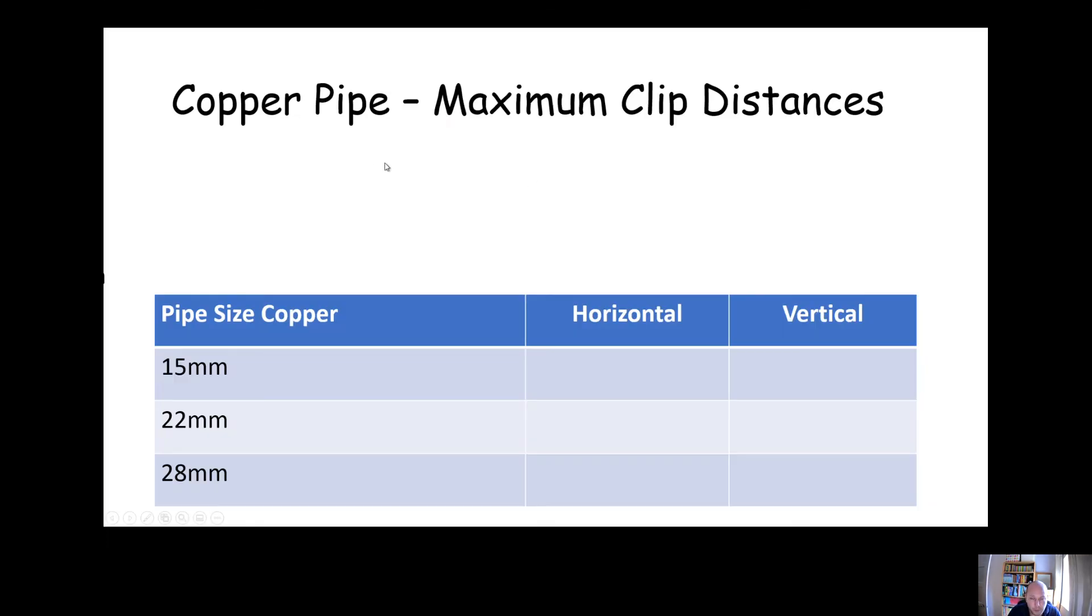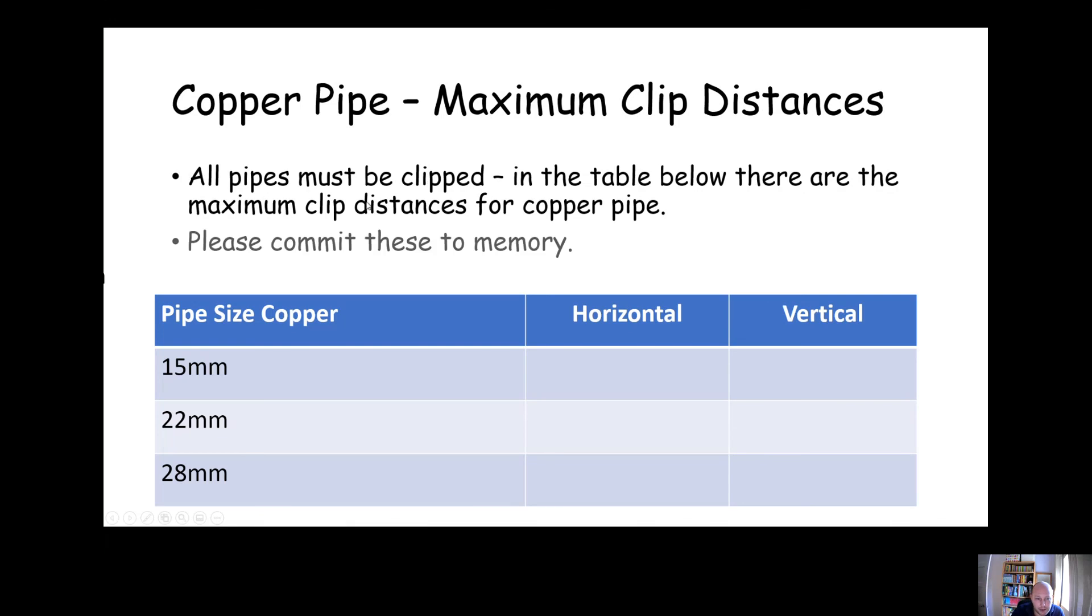One last thing: looking at pipe sizes, this is a key thing to remember. It will come up in several tests, so make sure we commit these to memory. For 15 mil copper, the horizontal maximum distance between two clips should be 1.2 meters, vertically 1.8. 22 mil and 28 mil are actually the same. 22 mil horizontally should be clipped every 1.8 at the absolute most, vertically 2.4. And 28 mil is just the same: 1.8, 2.4. Commit these to memory. It will be really worth your while.